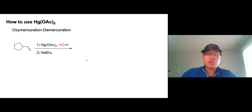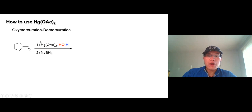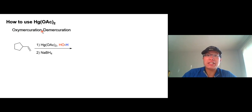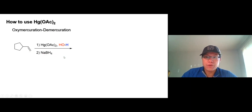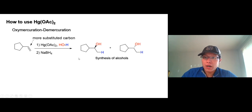Let's talk about how to use the mercury reaction. This reaction is called oxymercuration-demercuration. There are two steps: the first step we're adding an OH onto this carbon and also adding the mercury onto this carbon. The second step is removing the mercury with sodium borohydride, and you get the Markovnikov product with the OH group right here.